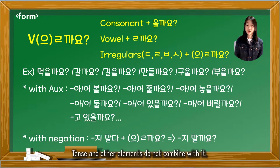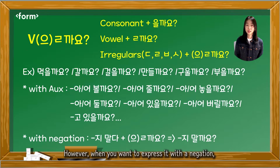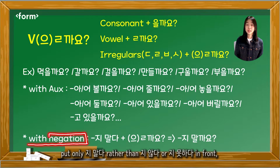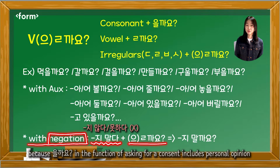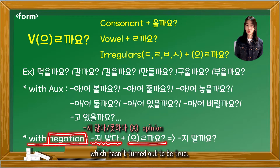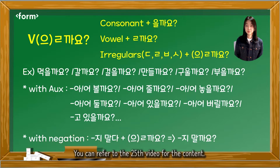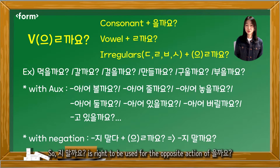Tense and other elements do not combine with it. However, when you want to express it with a negation, put only 지 말다 rather than 지 않다 or 지 못하다 in front. Because 을까요 in the function of asking for consent includes personal opinion which hasn't turned out to be true. You can refer to the 25th video for that content. 지 말까요? is the correct opposite form for 을까요.